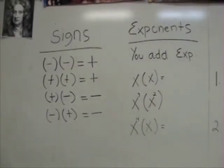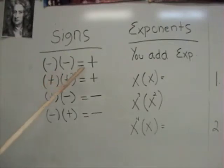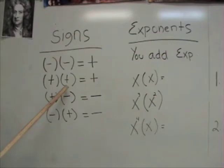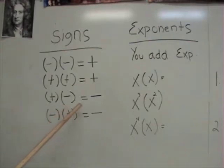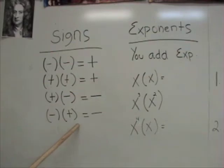When we are using the distributive property, we have to consider the signs. If negative multiplies negative, you're going to get positive. And if you have positive that multiplies positive, then you get positive. And if you have positive that multiplies negative, it's going to be negative. And if you have negative that multiplies positive, you're going to get negative.